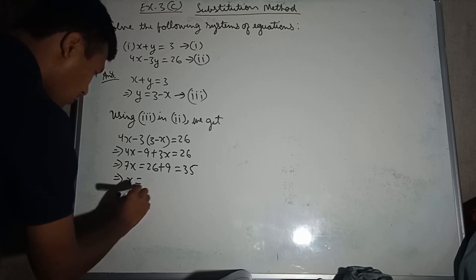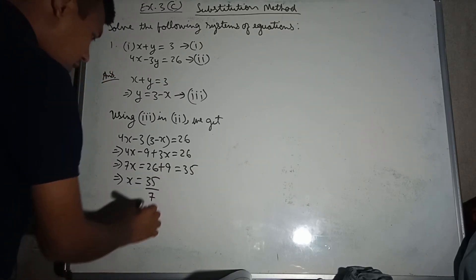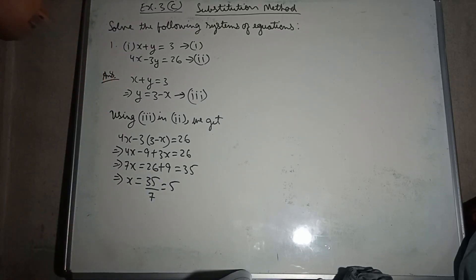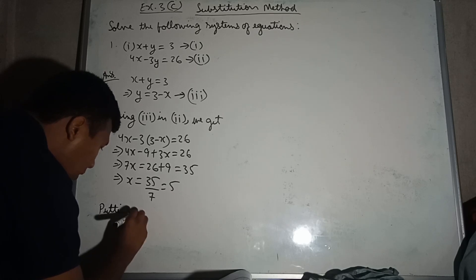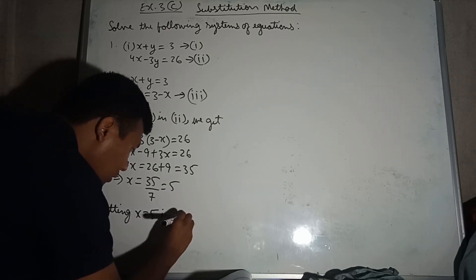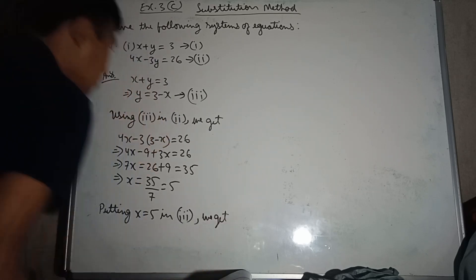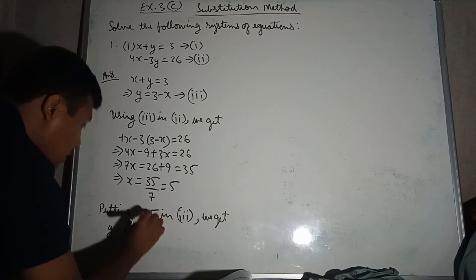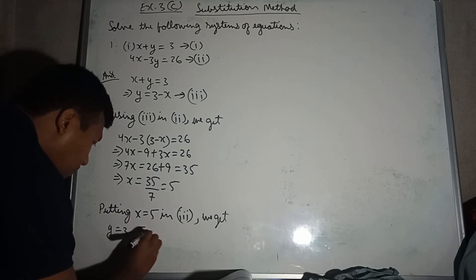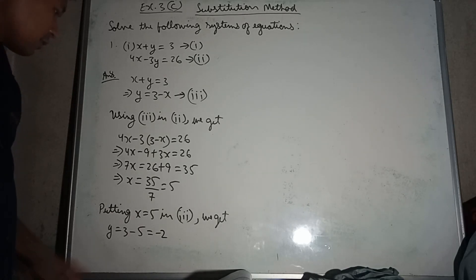So 7x is equal to 26 plus 9, which is 35. This implies x is equal to 35 divided by 7, which equals 5. Putting x equal to 5 in equation 3, we get y equal to 3 minus 5, which is minus 2.